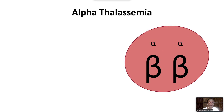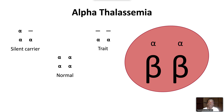In alpha thalassemia, there is decreased or absent production of alpha globin. Typically, four alpha globin genes are present because two copies each are inherited from each parent. A single mutation leads to the state of being a silent carrier, which is typically asymptomatic. A two-gene mutation results in alpha thalassemia trait. Patients with a three-gene mutation have more severe anemia and make a tetramer of beta globin called hemoglobin H, which can be identified on electrophoresis.